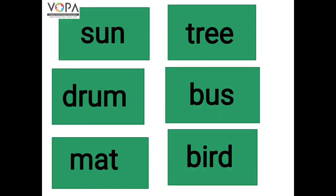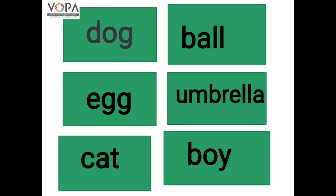Read the words. یہاں پر ہم کو یہ الفاظوں کو پڑھنا ہے، چلیے پھر ہم پڑھتے ہیں۔ Sun, tree, drum, bus, mat, bird, dog, ball.